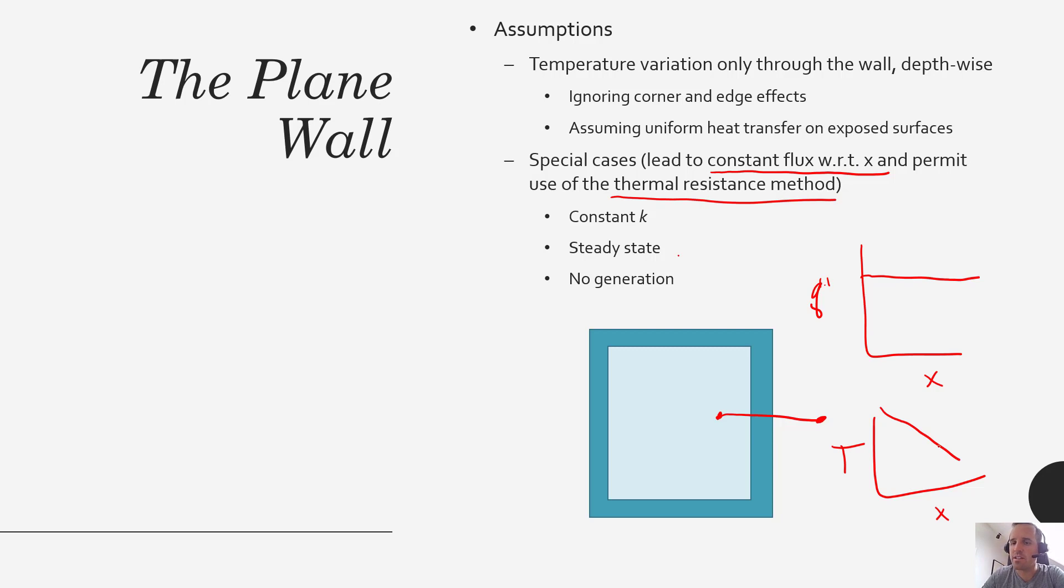So if dT/dx is constant, as k is constant, then our flux as a function of x will also be constant. This is a really important implication, and hopefully you'll start to grasp this and internalize it as we go.